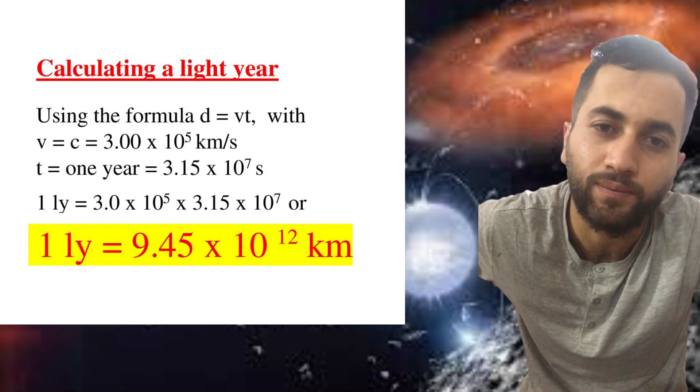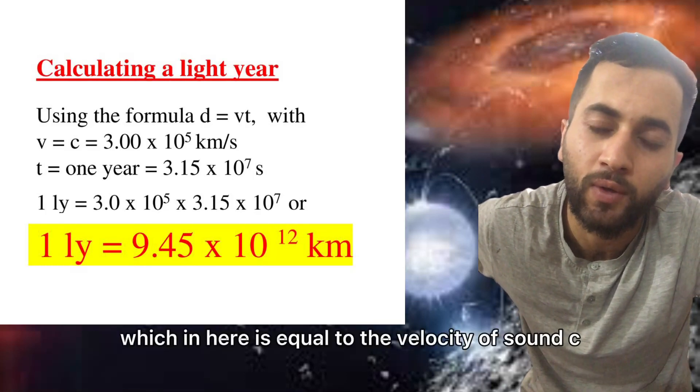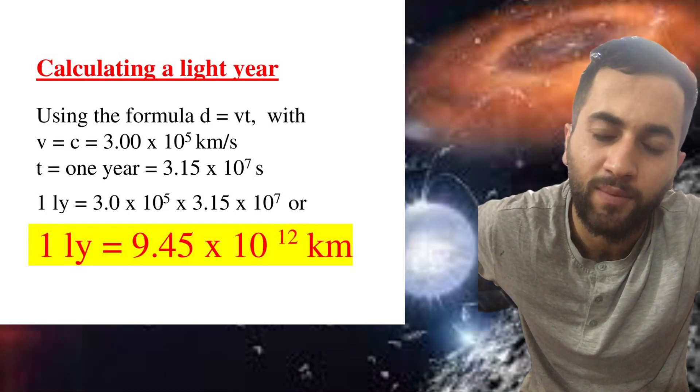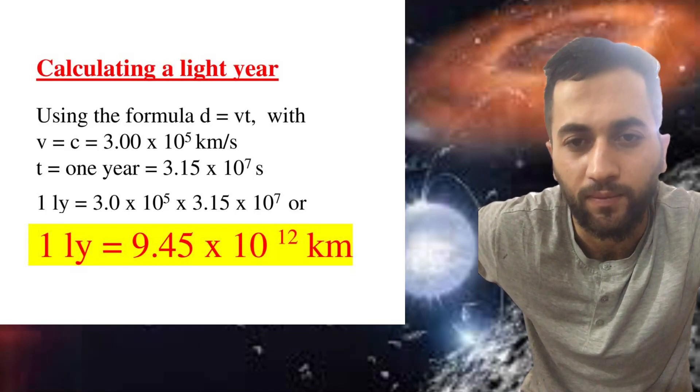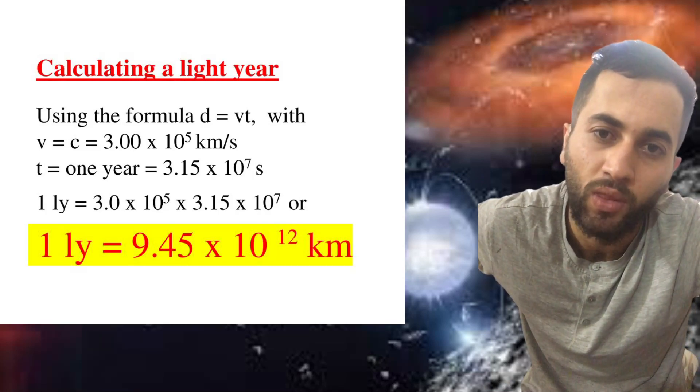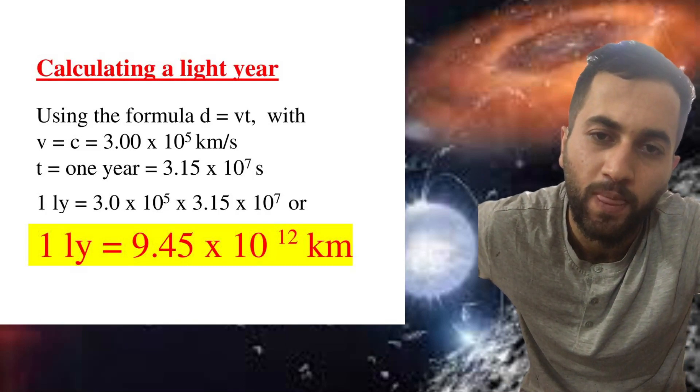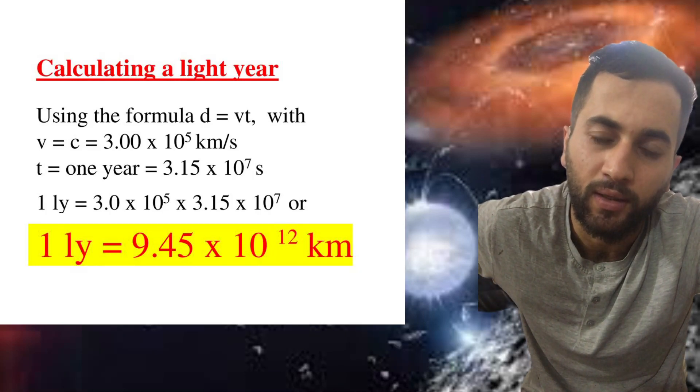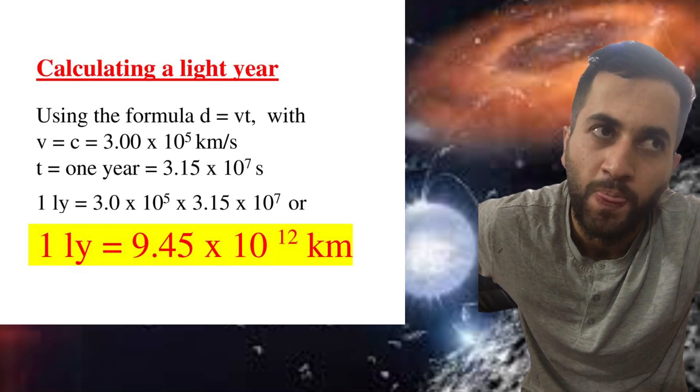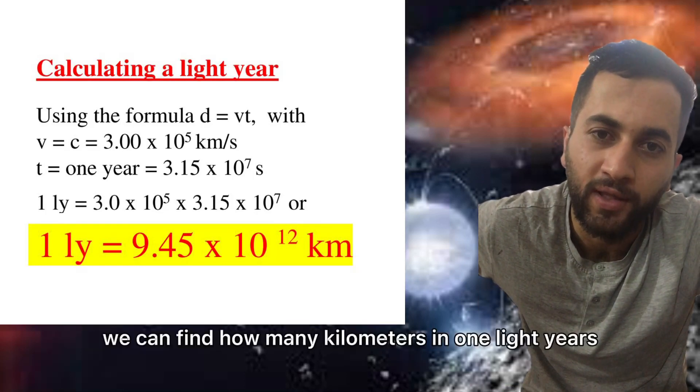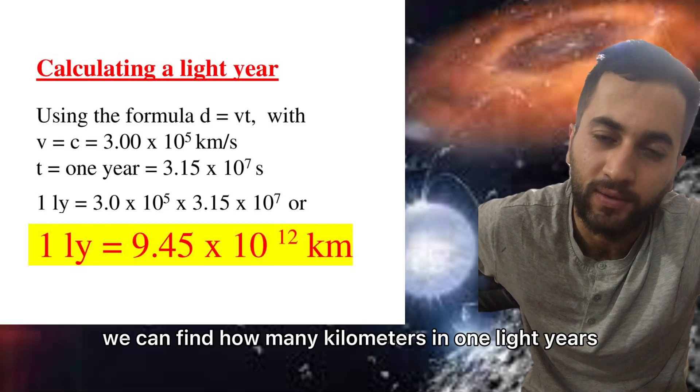And by using the following formula d equal to v times t, which in here is equal to the velocity of sound c, 3 times 10 to 8 kilometers over second, by timing the seconds of one light year and velocity of sound, we can find how many kilometers in one light year.